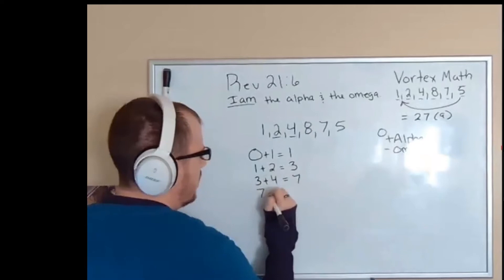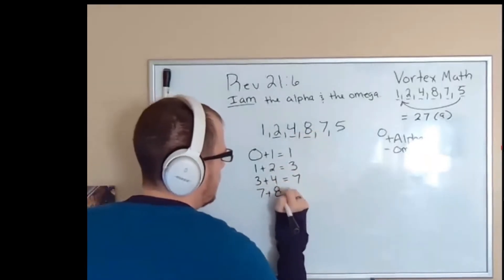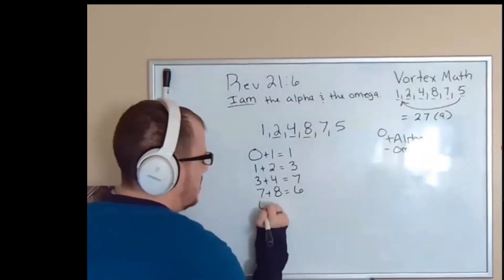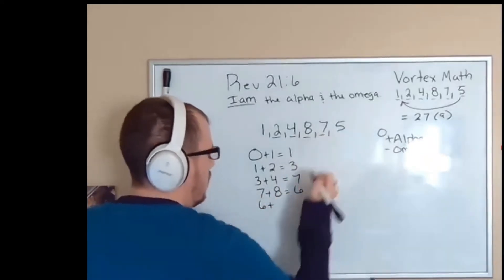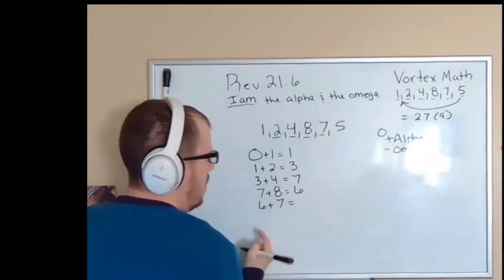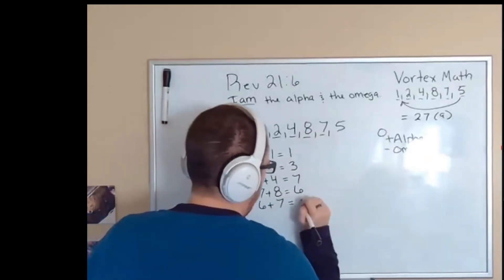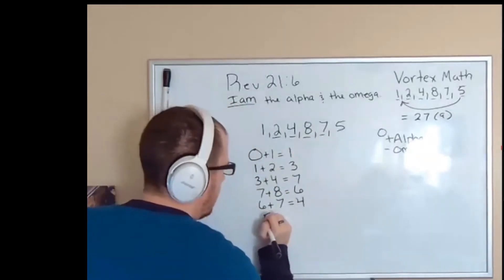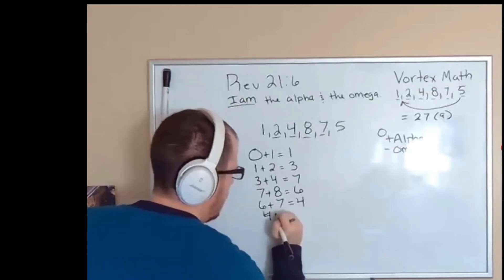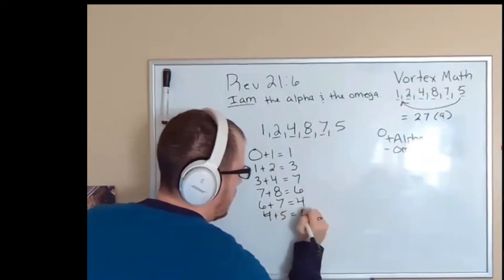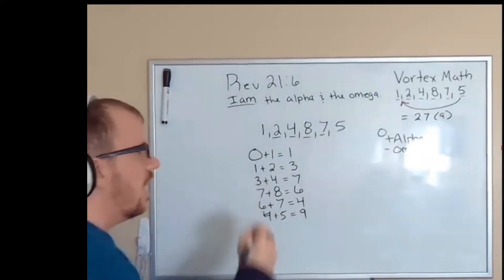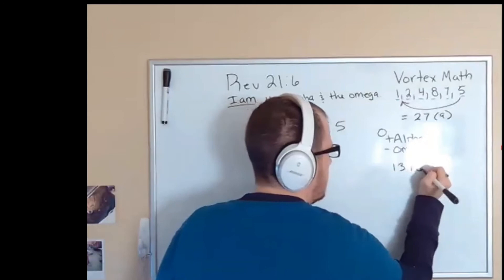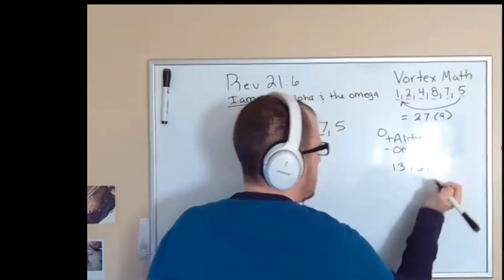So seven plus eight is going to end up being six because it's 15, which reduces to six. Six plus seven is going to end up being four—it's 13, which reduces to four. And four plus five is going to be nine.